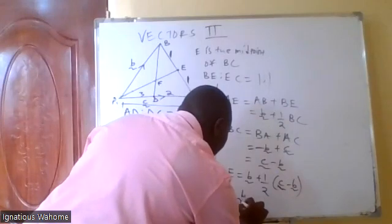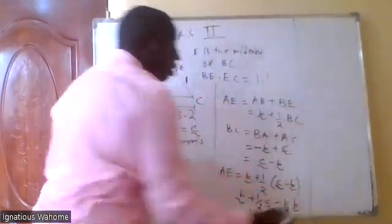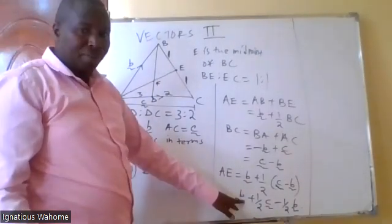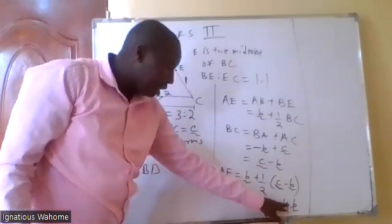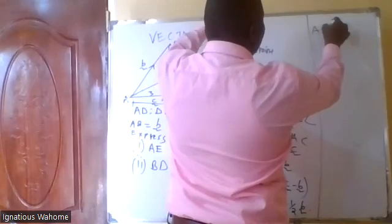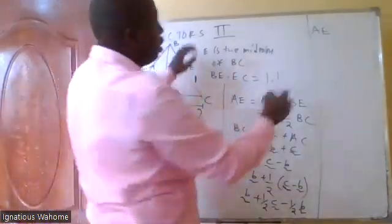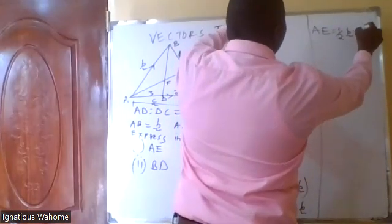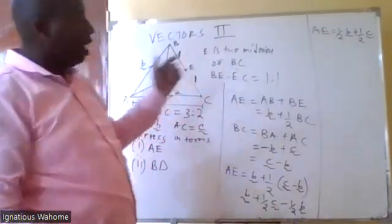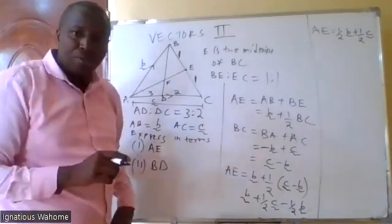So therefore AE equals vector b plus a half of BC. Our BC is c minus b. Opening the bracket: b plus a half c minus a half b. Bringing like terms together: b minus a half b is a half b. So our AE equals a half b plus a half c. That is vector AE.